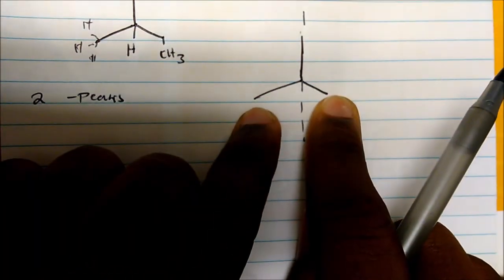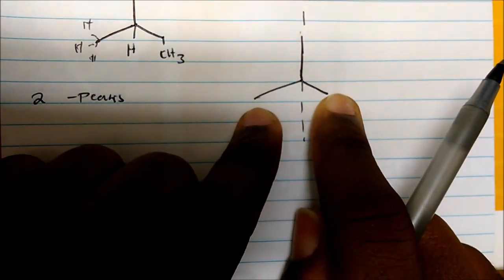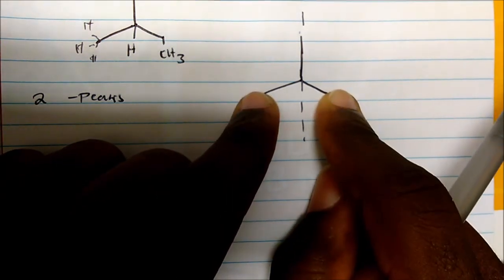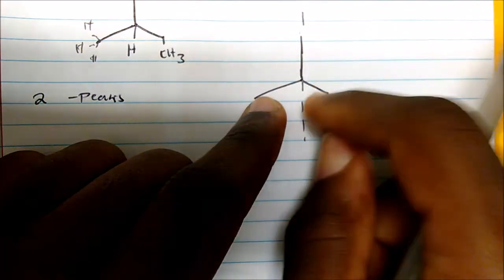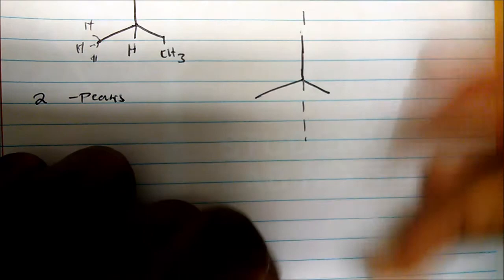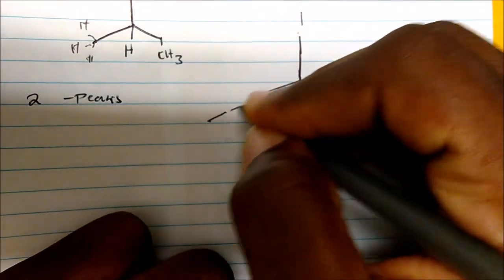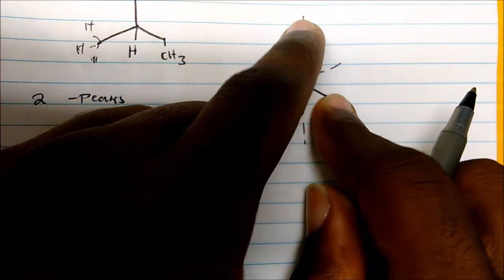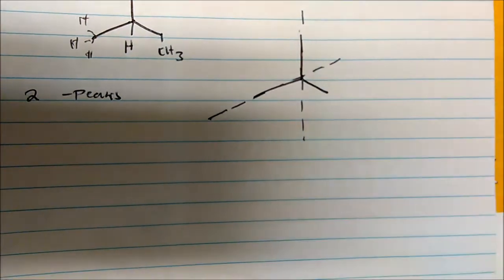Now these protons are equivalent to these protons. These protons are also equivalent to both because this is gone now, and you could imagine I could also split this here, leaving these protons on the side. So these methyl protons turn out to be all equivalent.